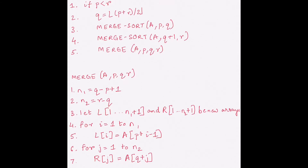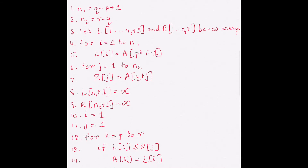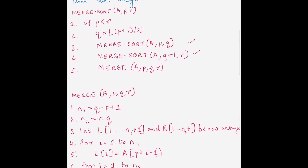Merge sort is a recursive divide-and-conquer algorithm. You divide the array into two halves by calling merge sort recursively, and then combine them in the merge step. The merge step is the main core part of merge sort, so when we prove correctness we're going to focus on the merge function — if we can prove that merge is correct, proving merge sort correct is straightforward.